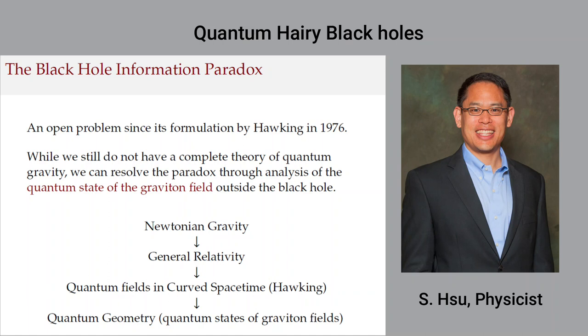Hawking proposed it in 1976. So I'm guessing a lot of people in this talk were not born in 1976, but that is when Hawking first formulated the paradox. And the paradox arises as soon as you have a general relativistic formulation of a black hole, and then start to seriously consider the quantum matter fields.